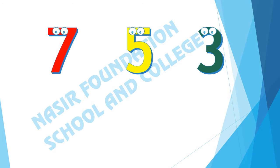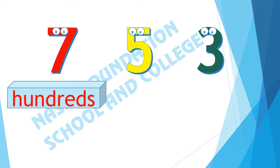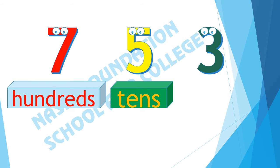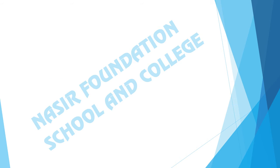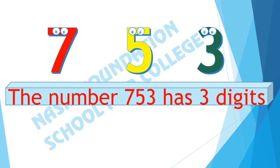There are 3 digits in the number 753. The digit 7 is placed at the hundreds place. There are 5 tens. The place value of 3 is units. The number 753 has digits 7, 5, and 3.